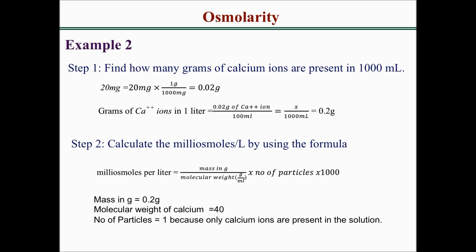We already know our mass in grams, which is 0.02 g. We weren't given the molecular weight of calcium, but it's something we need to know. The molecular weight of calcium is 40. The number of particles is 1 because there is only one calcium ion present in this solution.